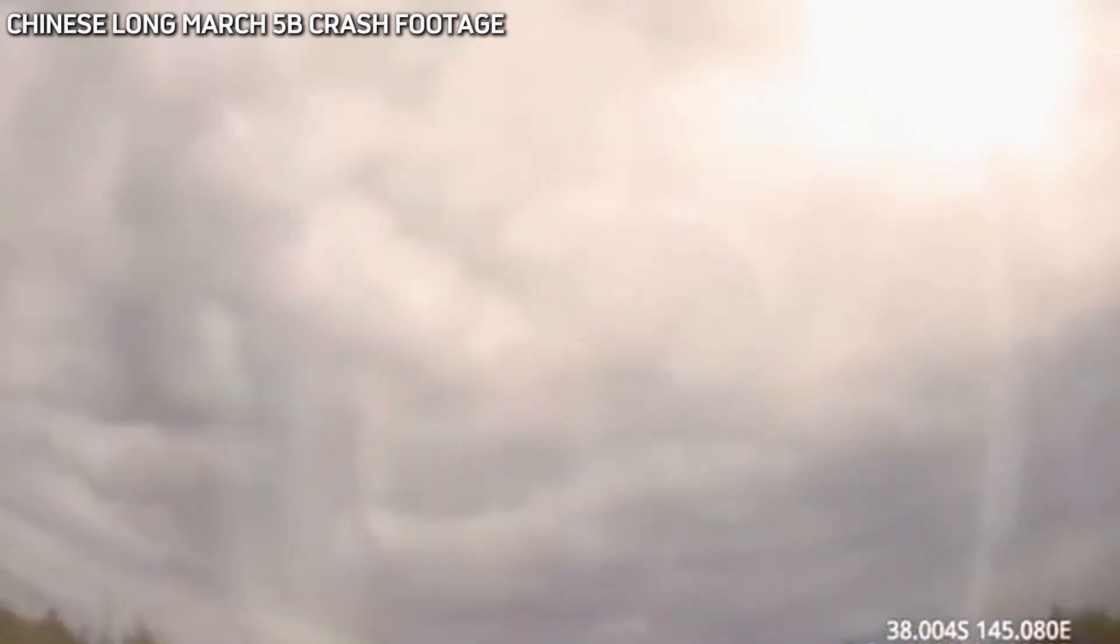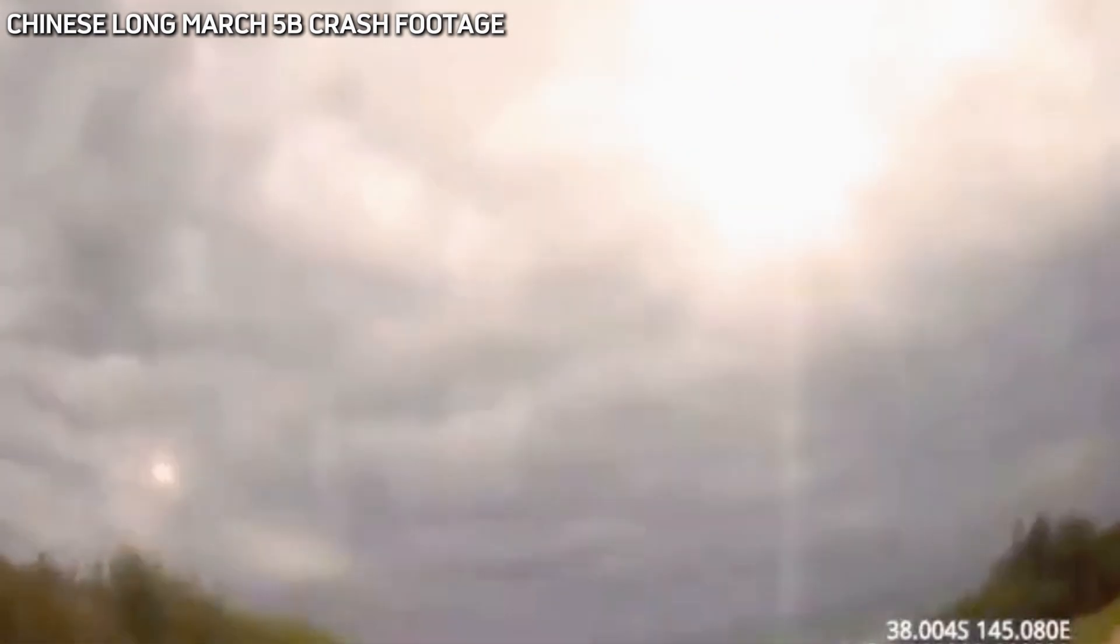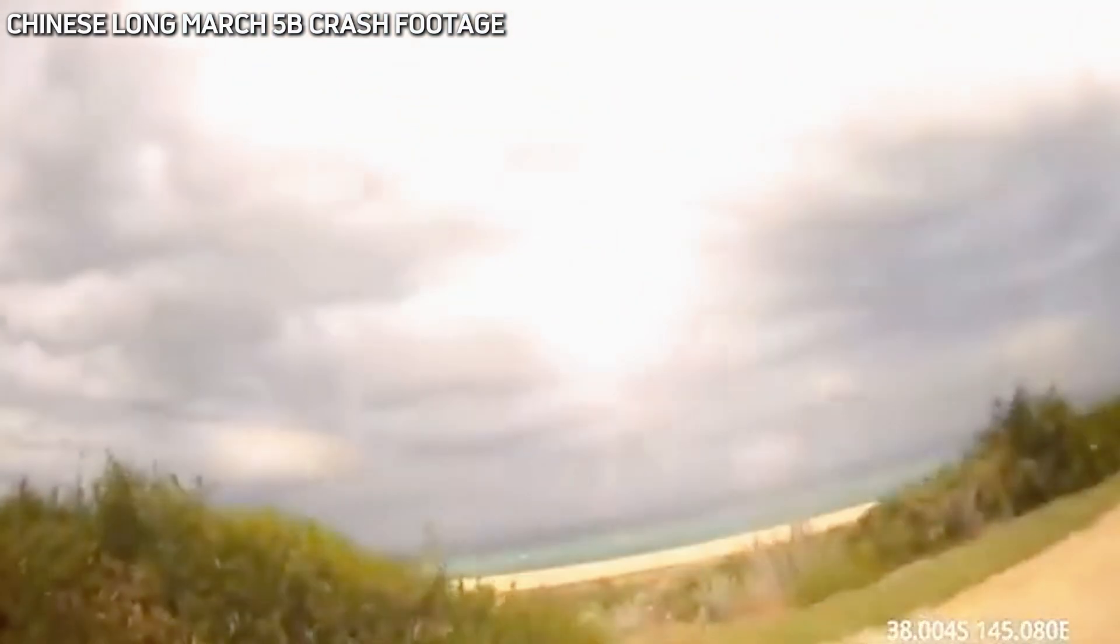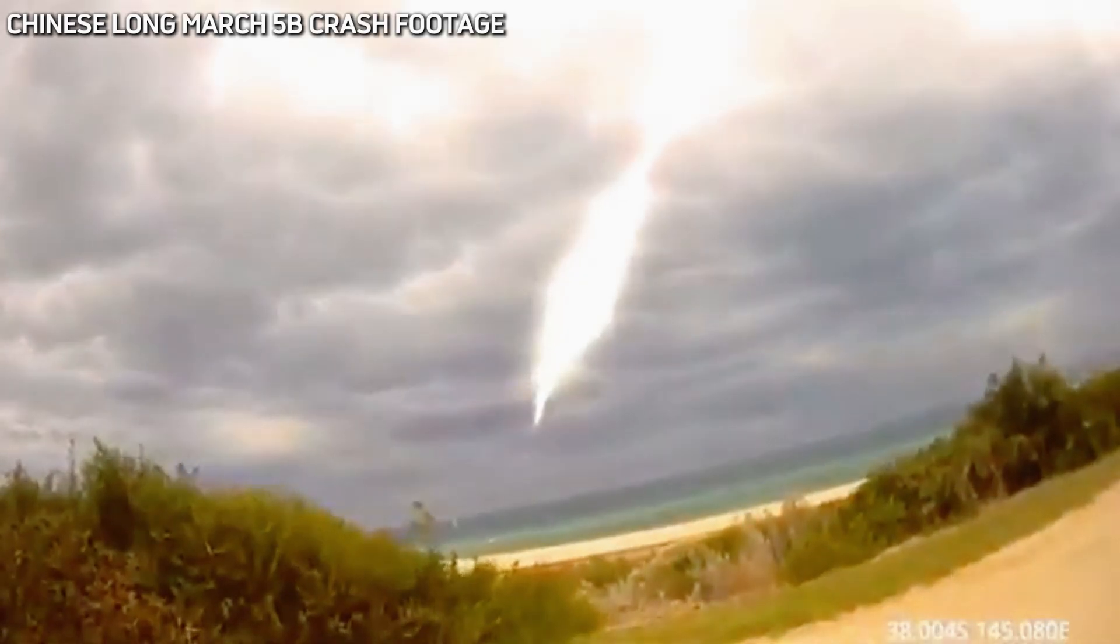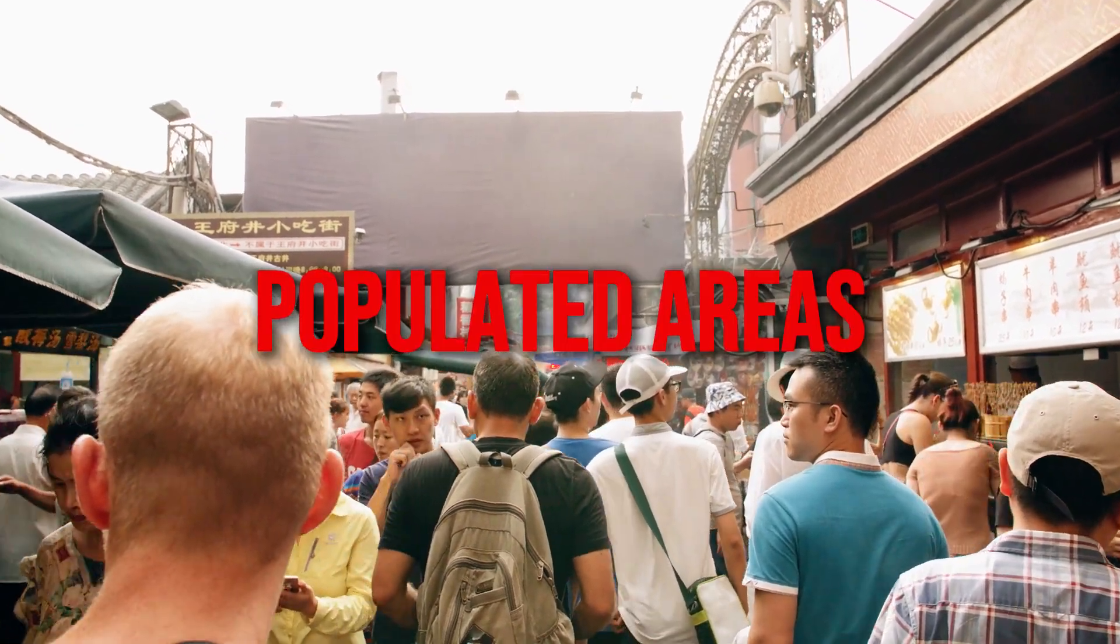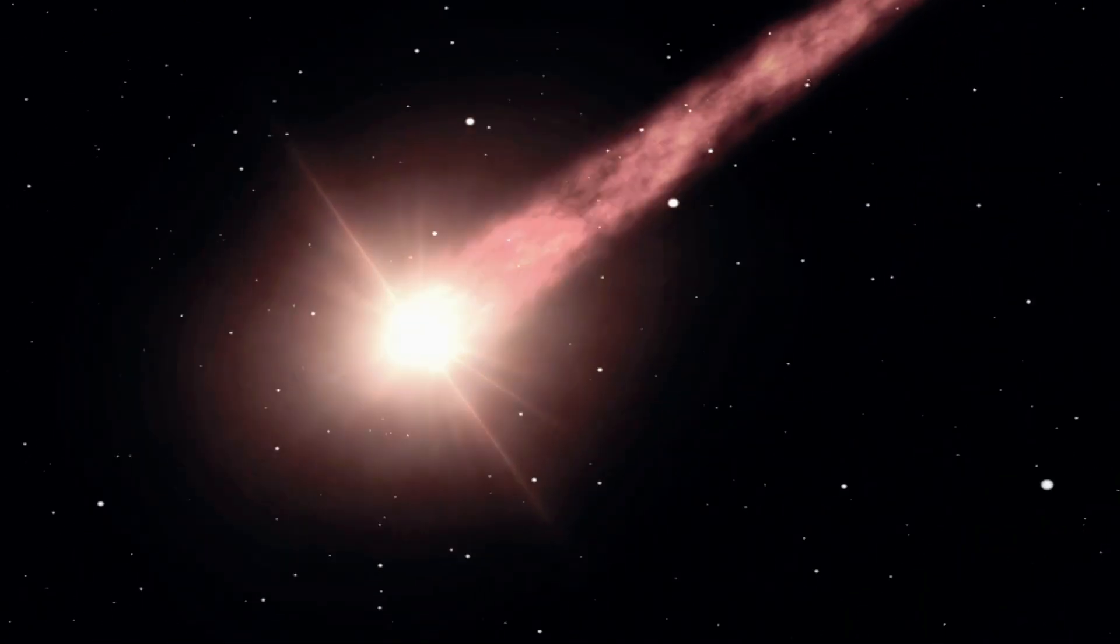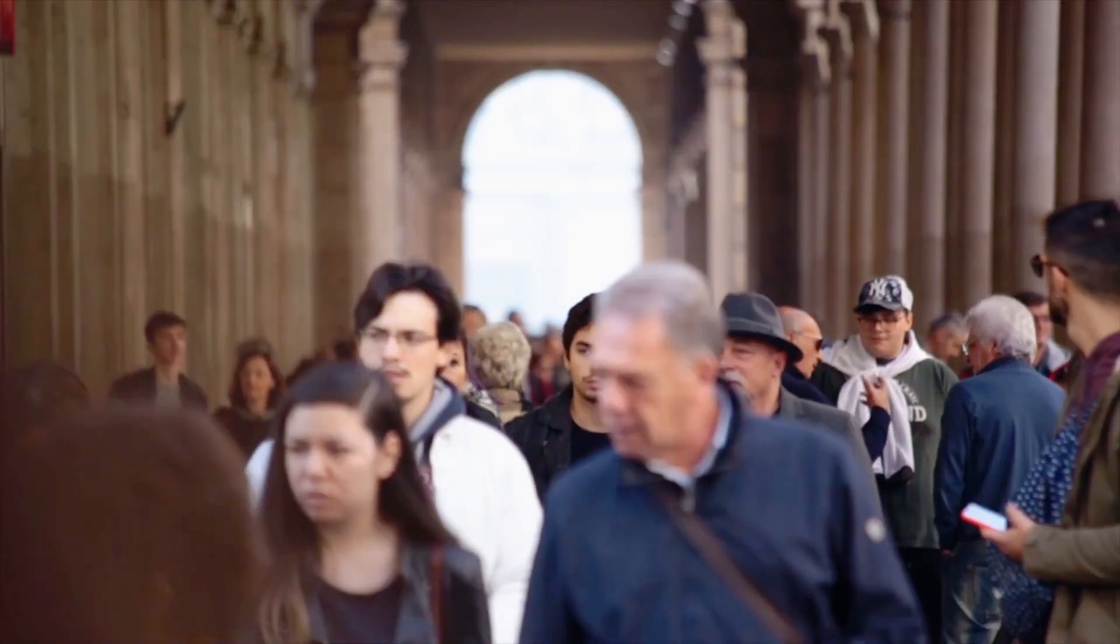We've already had close calls, like in 2022, when massive fragments from a Chinese Long March 5B rocket crashed into the Indian Ocean, narrowly missing populated areas. Unlike meteors, which burn up completely, space debris doesn't always disappear on re-entry. Large pieces can survive the intense heat and impact the surface, potentially hitting buildings, vehicles, or even people.